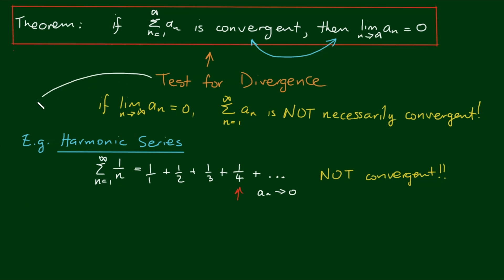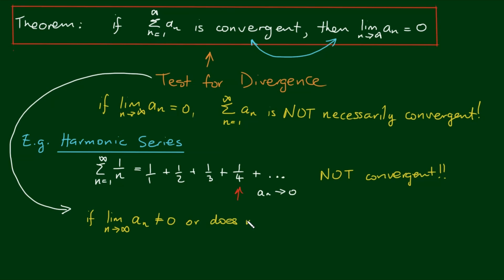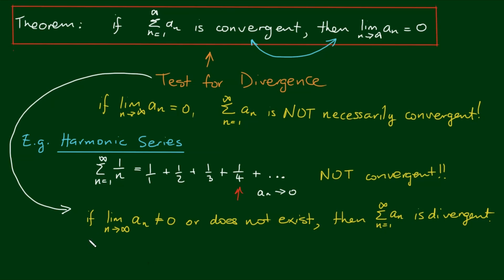From the theorem, we get the test for divergence: if the limit as n approaches infinity of a_n is not equal to zero, or does not exist, then the series — the sum from n equals 1 to infinity of a_n — is divergent. Let's put a box around this as well.